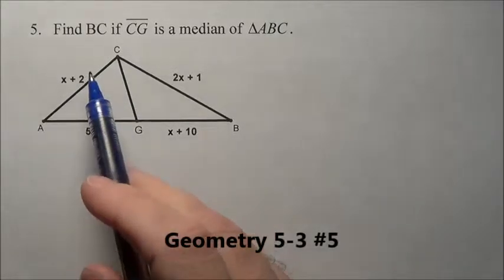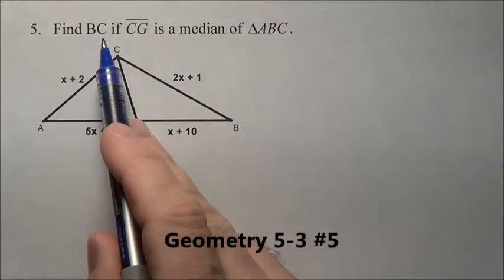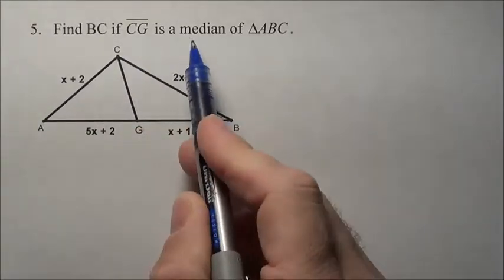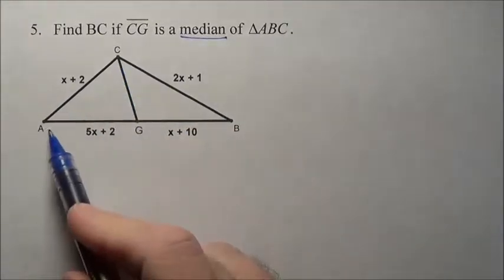Problem number 5, it says find the length of BC if line segment CG is a median of triangle ABC.